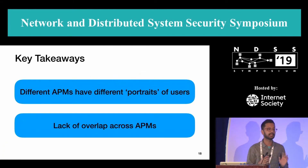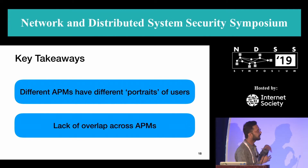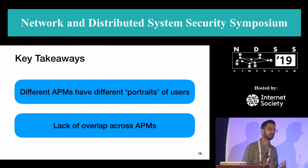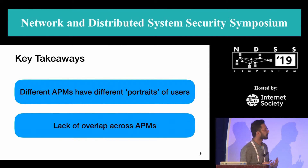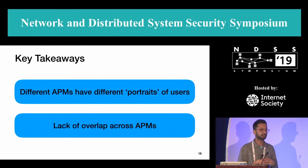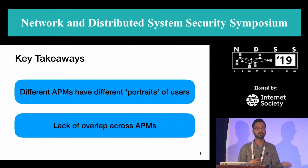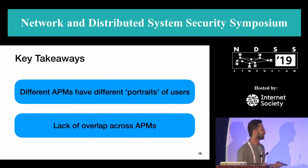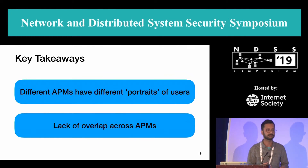The key takeaways from this goal are that different APMs have different portraits of users and probably different underlying data sources. For example, Facebook is a social network that relies on your likes, whereas BlueKai is a tracker that also has partnerships with data brokers such as Acxiom and Datalogix, and gets branded data from them. We also noticed a lack of overlap across APMs.